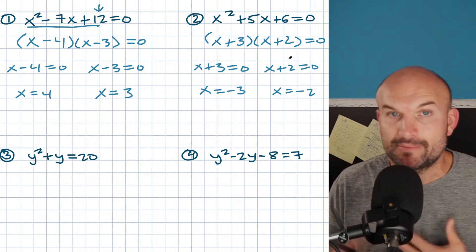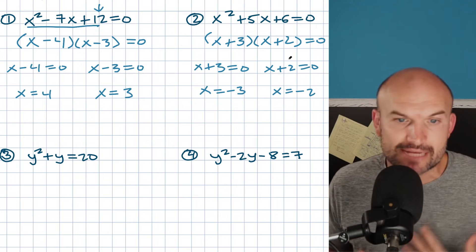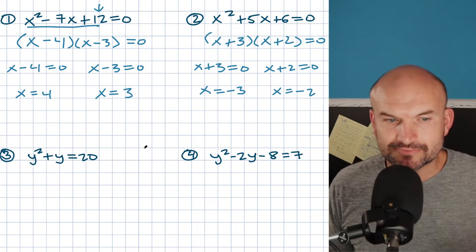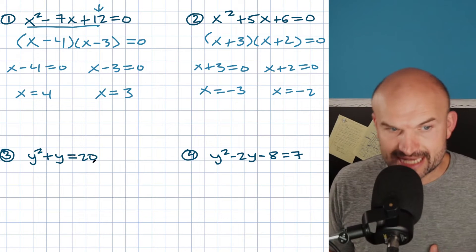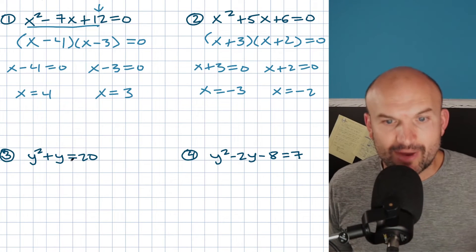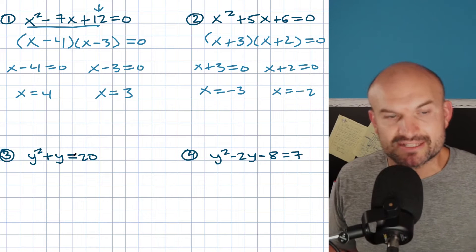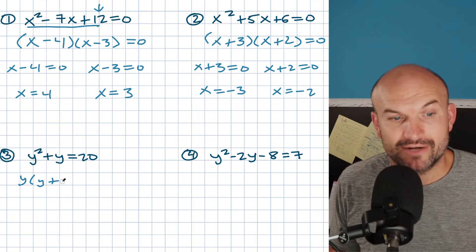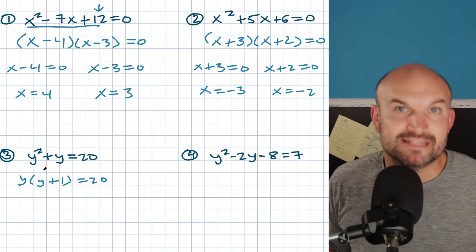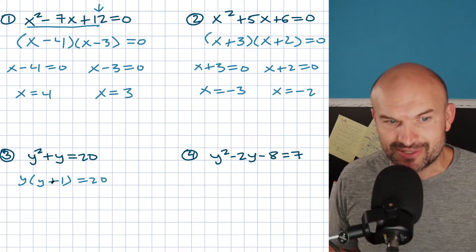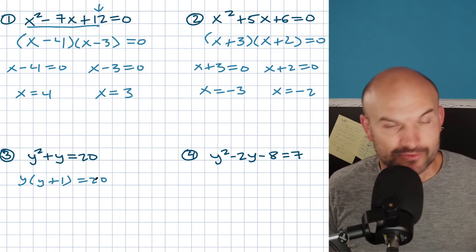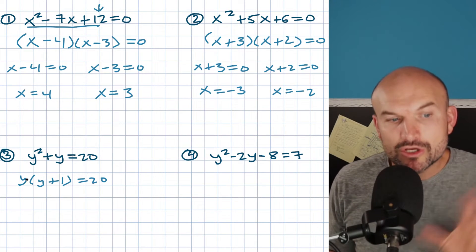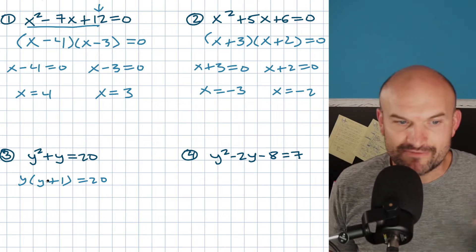Those are going to be your roots, or also the x-intercepts of the equation. Hopefully these first two examples were fairly straightforward, because in the next two, a lot of students make mistakes. They see only a y-squared and a y on one side and think: should I just factor out a y? And that's what a lot of students will do — factor out a y. But you can't apply the zero product property when you have a product equal to 20 instead of zero. So don't do this — don't try to factor that out.